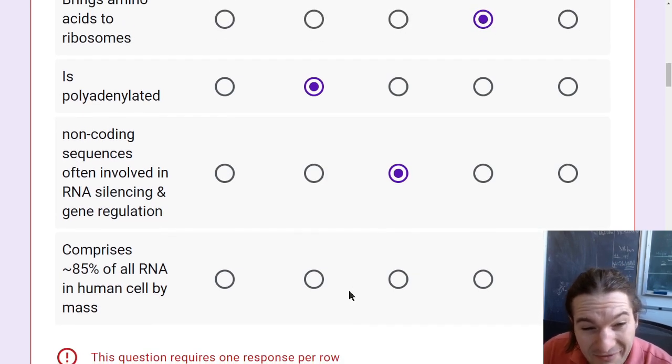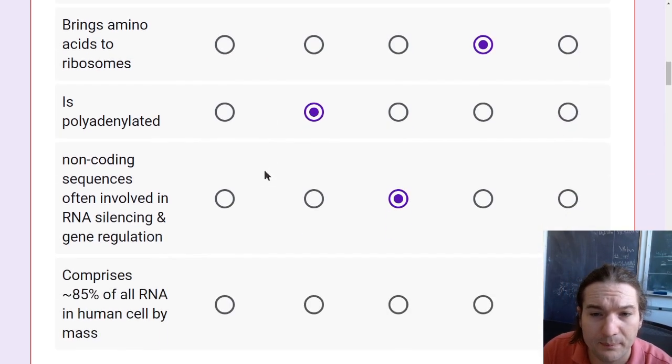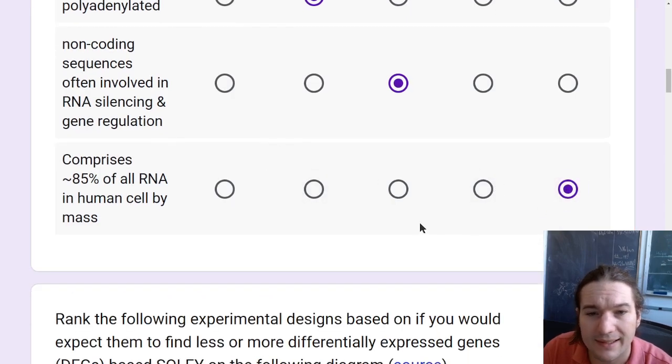Comprises 85% of all RNA in human cells by mass. Now, that is an approximate number. It really depends upon the cell. But that's ribosomal RNA. Which, if you remember, ribosomal RNA complexes are mixtures of proteins and RNA molecules that are what end up assembling our proteins from individual amino acids. So that would be that one right there.